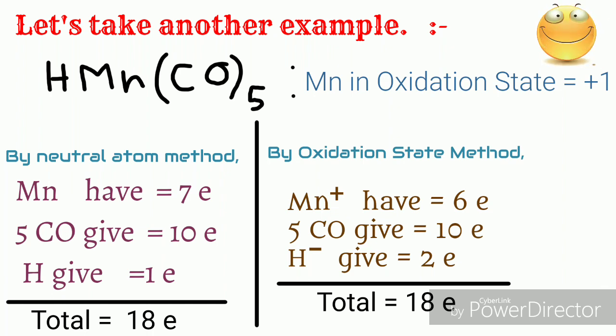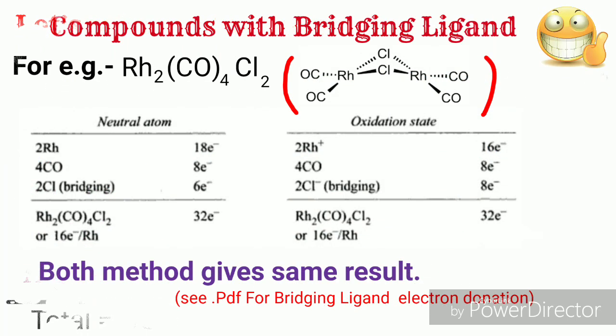I will discuss more about the rule, so please watch the video till the end. Now if we consider a bridging ligand, then the number of electrons donated by a bridging ligand is given in the table in the description box as a PDF form. So click on the link and collect it. And also you can determine the number of electrons donated by bridging ligands and also determine whether the compound obeys the 18 electron rule or not.